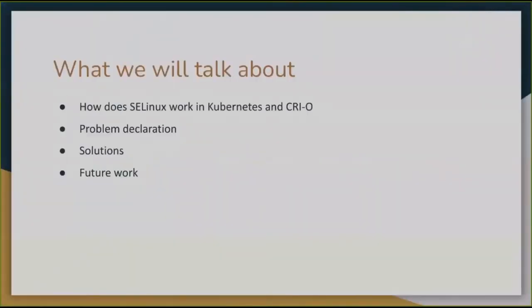Let's see what we are talking about today. First, we will speak about how SELinux works together with Kubernetes and CRI-O, and discuss the SELinux options field in the security context, as well as available SELinux options and how labeling affects containers in production. After that, we will discuss the problem declaration — timeouts from resource relabeling and their performance impacts. Then we will speak about possible solutions, such as skipping the relabel if the container is super-privileged, and finally discuss future work and potential optimizations.